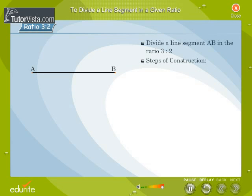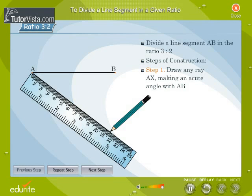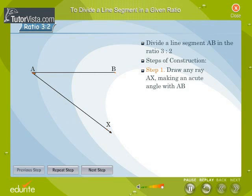Steps of construction. Step 1: Draw any ray AX making an acute angle with AB.